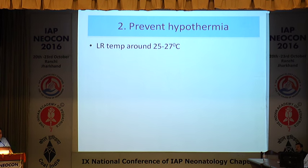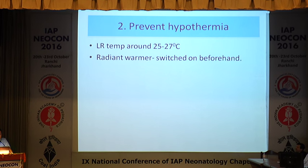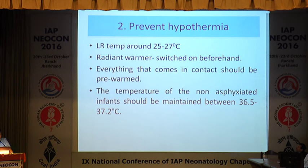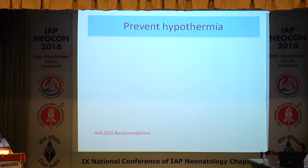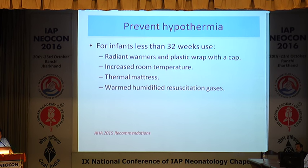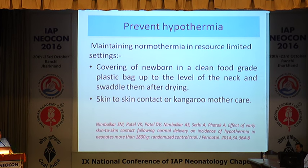Foremost is to prevent hypothermia. We need to keep the temperature of the labor room or OT appropriate — around 25 to 27 degrees. The radiant warmer should be switched on beforehand; please don't save electricity there. Everything that comes in contact with the baby should be pre-warmed, so the linen should be pre-warmed. The temperature of non-asphyxiated infants should be maintained between 36.5 to 37.5 degrees. For infants less than 32 weeks, use a radiant warmer, plastic wrap, and a cap. We also need to increase room temperature to about 28 degrees, use a thermal mattress to prevent heat loss, and provide warm humidified resuscitation gas.